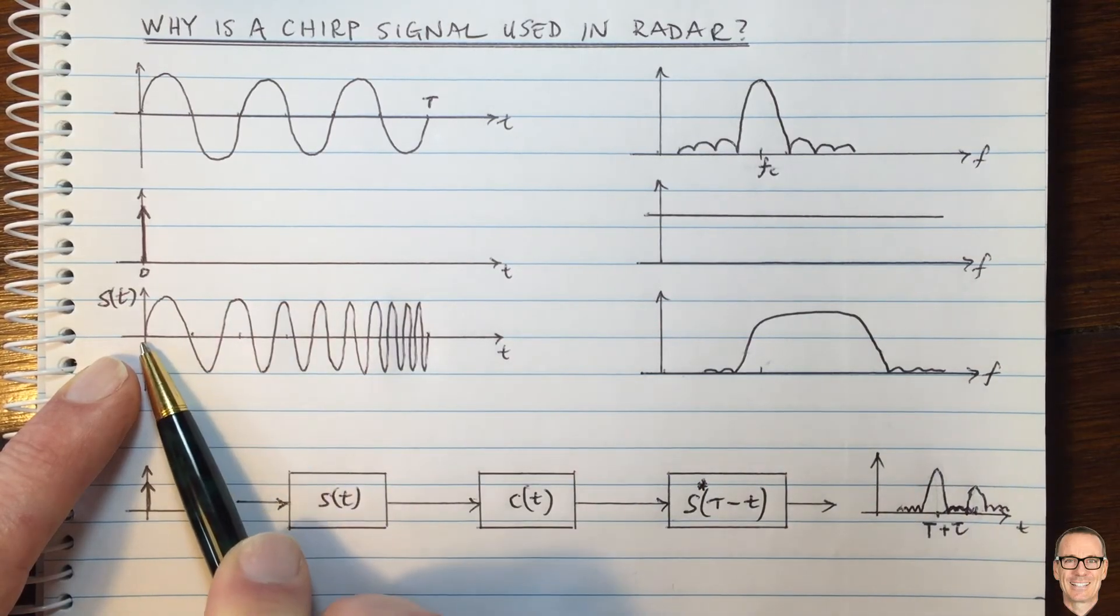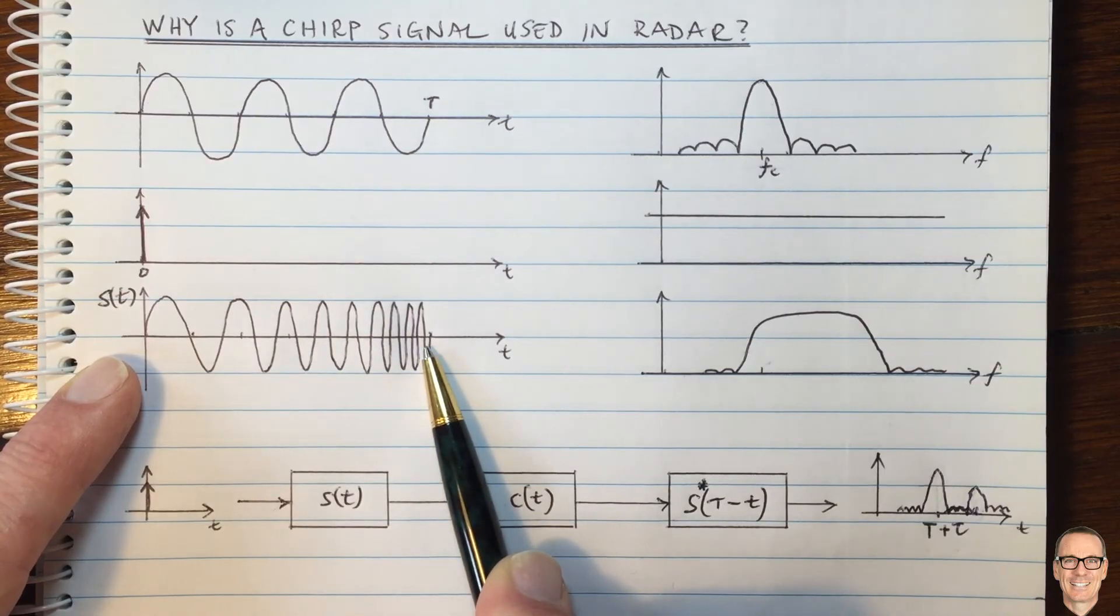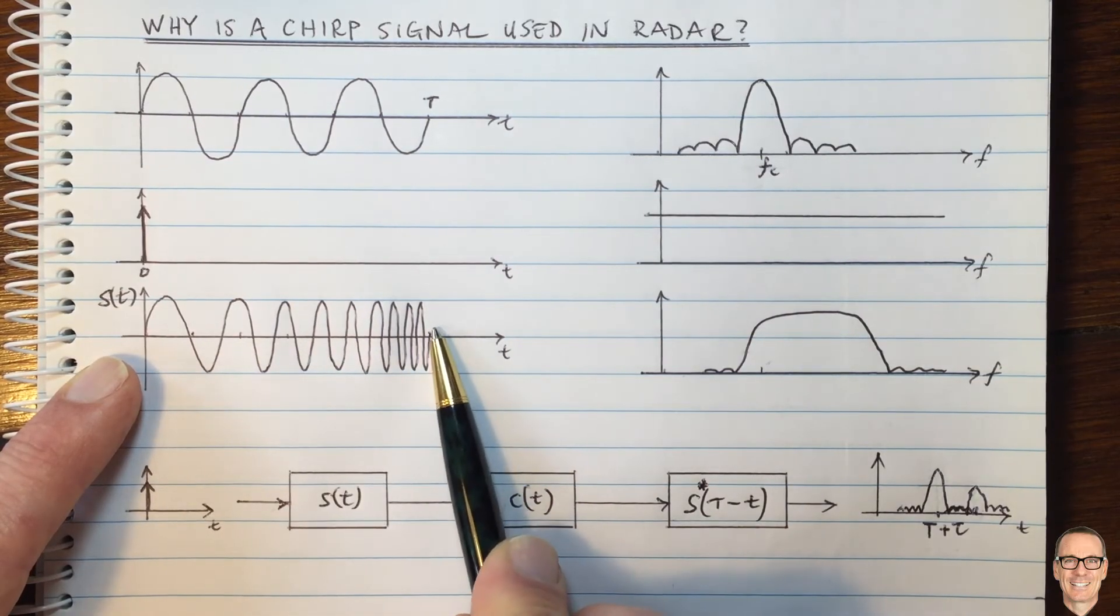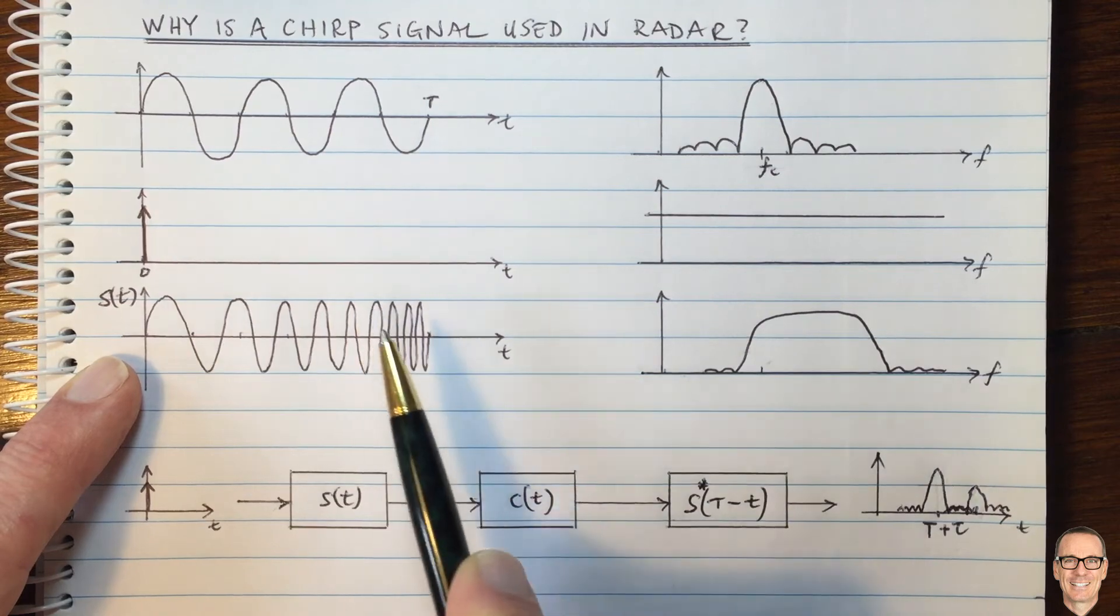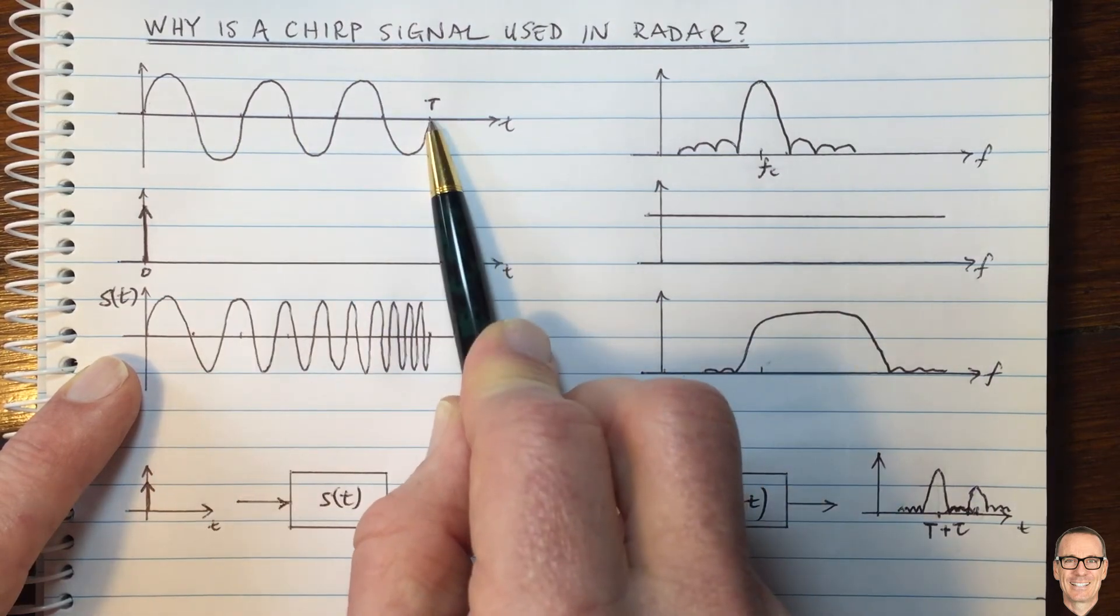Sometimes this is also called intrapulse modulation. I think you can see why, because internal to the pulse, you are modulating the waveform, not sending a straight sine wave.